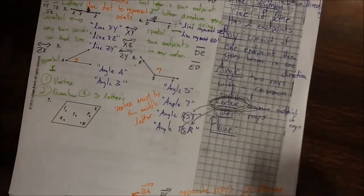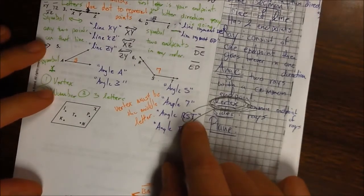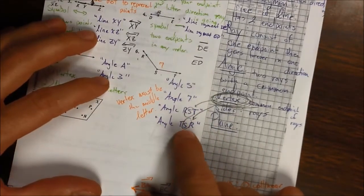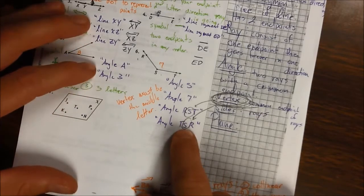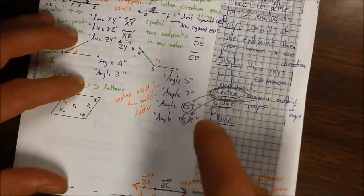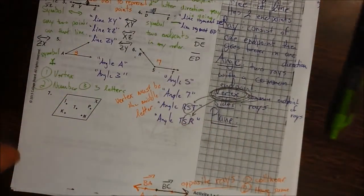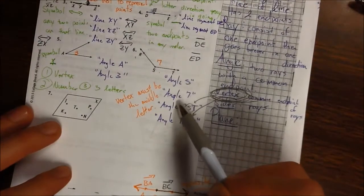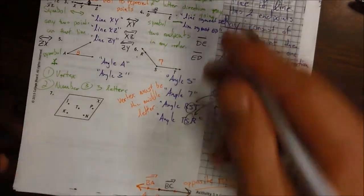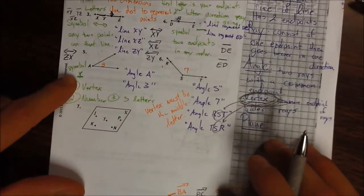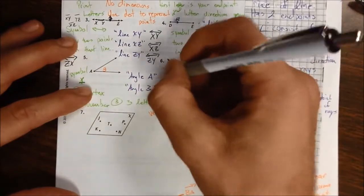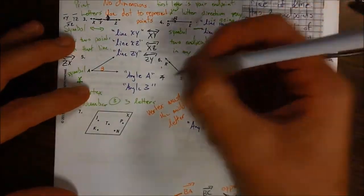But we could also call it angle RST or we could call it angle TSR. Now notice for both names, I kept S in the center. And that is absolutely crucial because that is the vertex. Whenever you use the three-letter process, the vertex must be the middle letter. So rather than having to write angle S or angle 7 or angle RST, is there a shorthand notation? And there absolutely is. You're going to use your symbol that we talked about over here. And then just write either the letter, number, or the three letters.